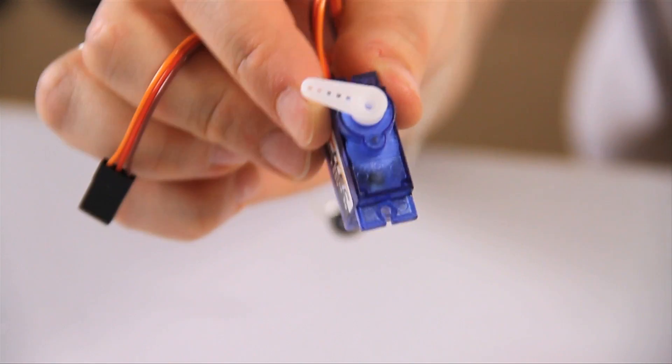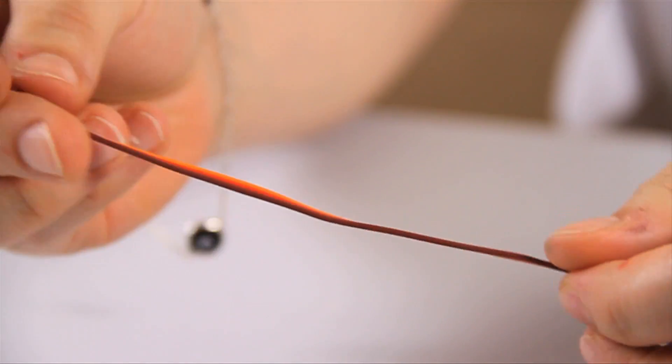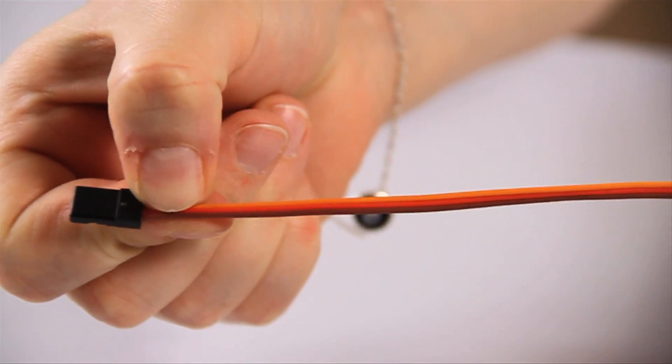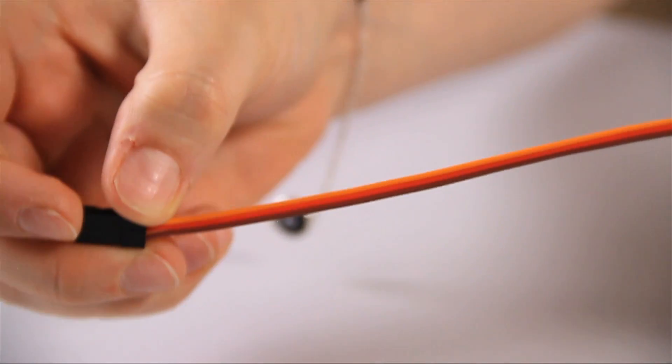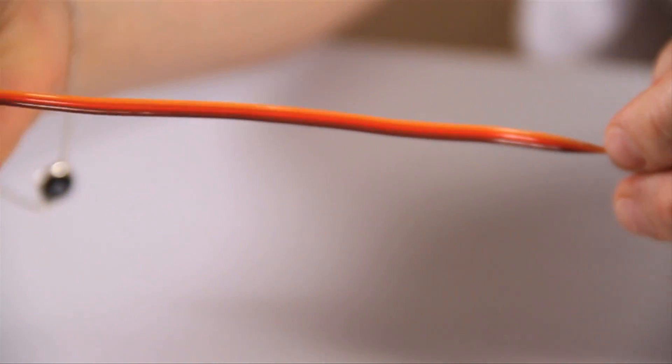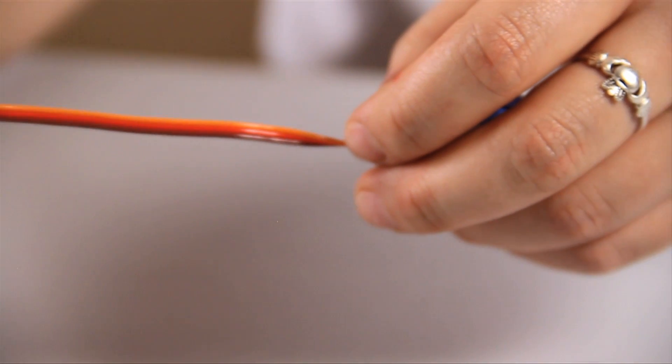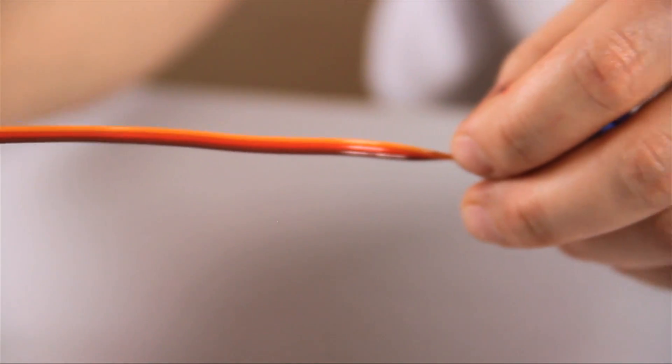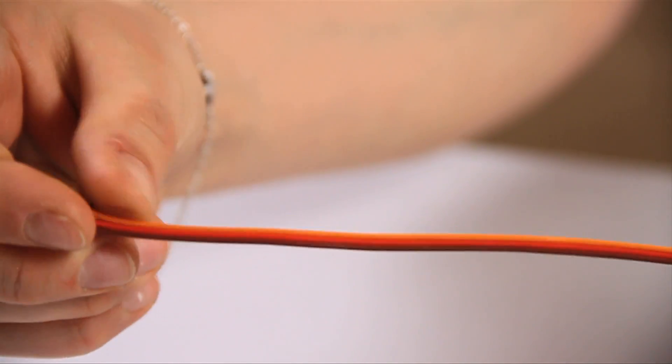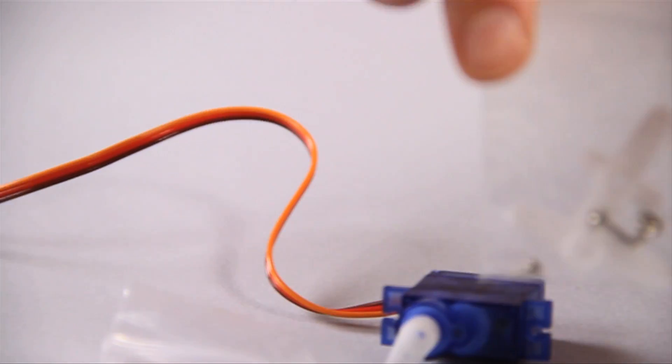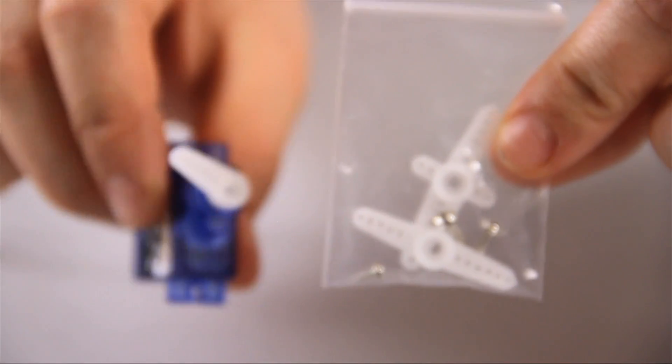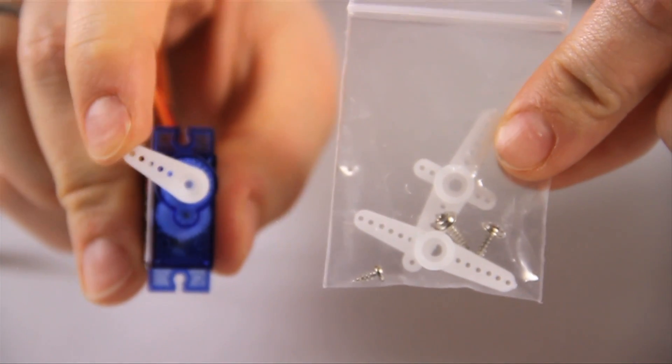Servo motors have three wires. You have the power wire, which is usually the red one. And then they have a ground wire, which is typically black or brown, this one. And then a signal pin, which is typically yellow, orange or white. So in this case, it's orange. And then these are all the attachments you can change on your servo if you find them useful for different projects.